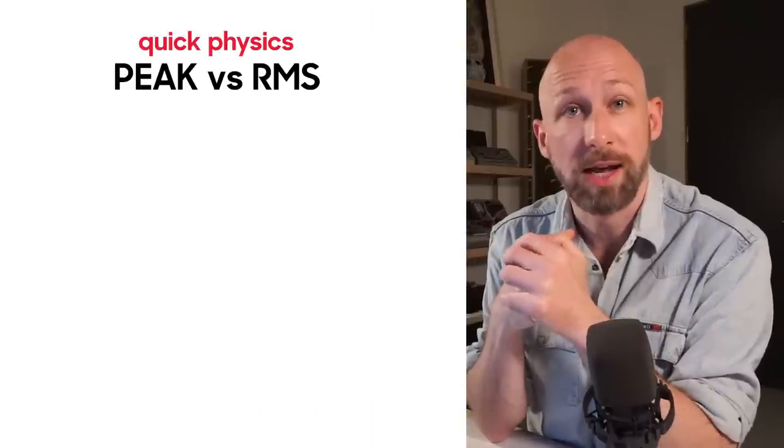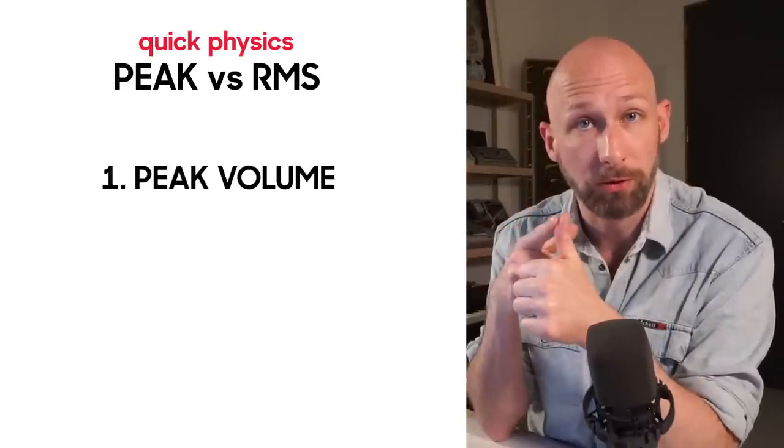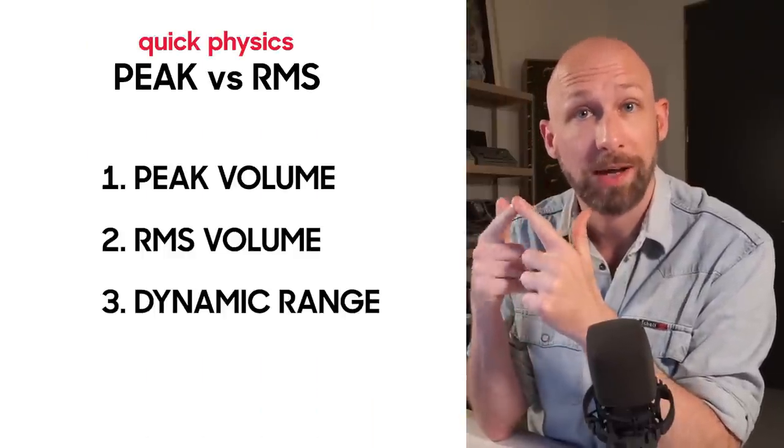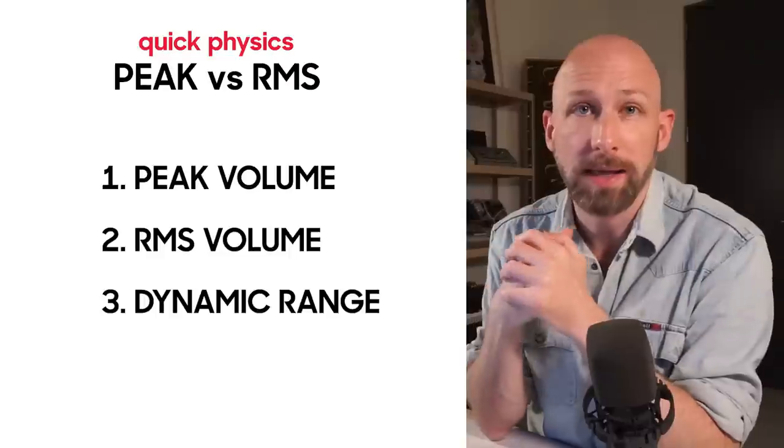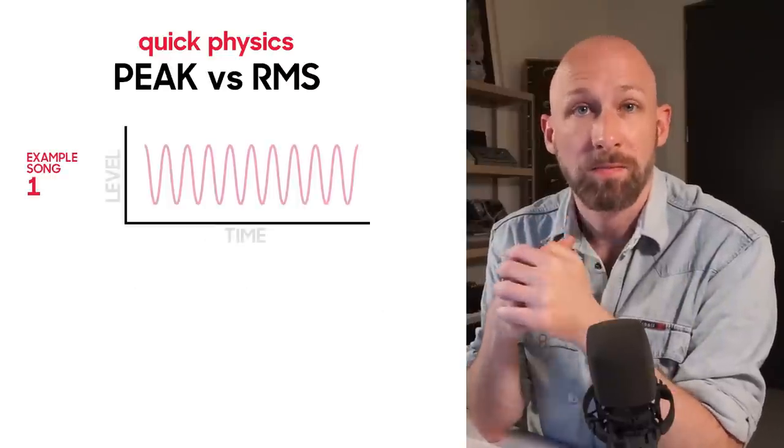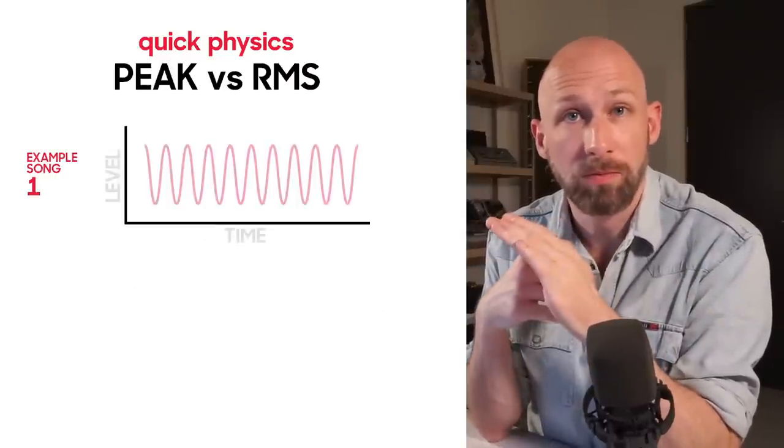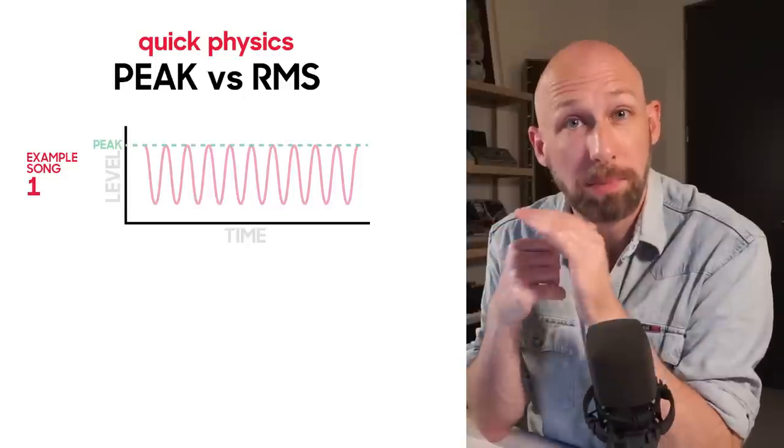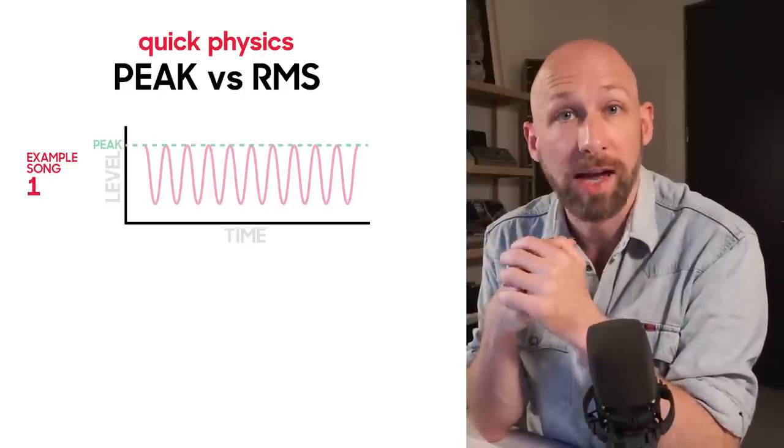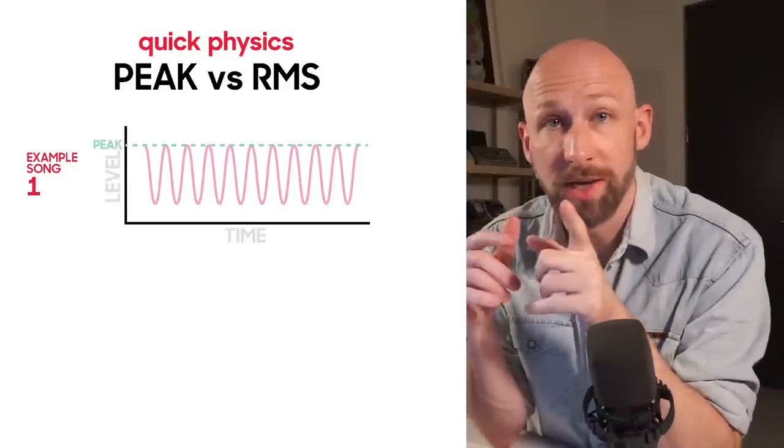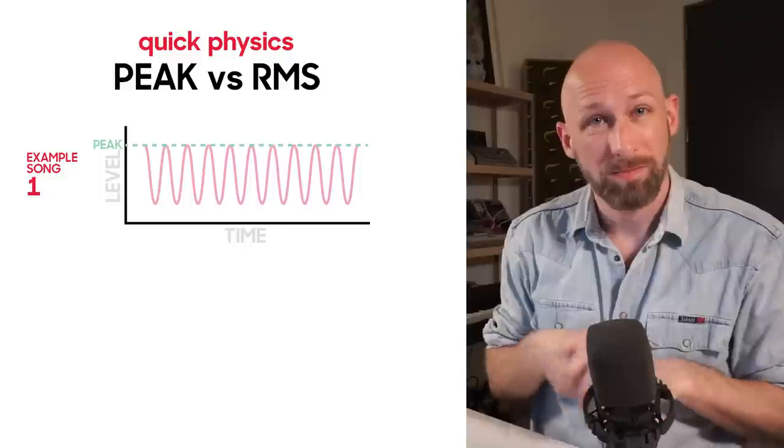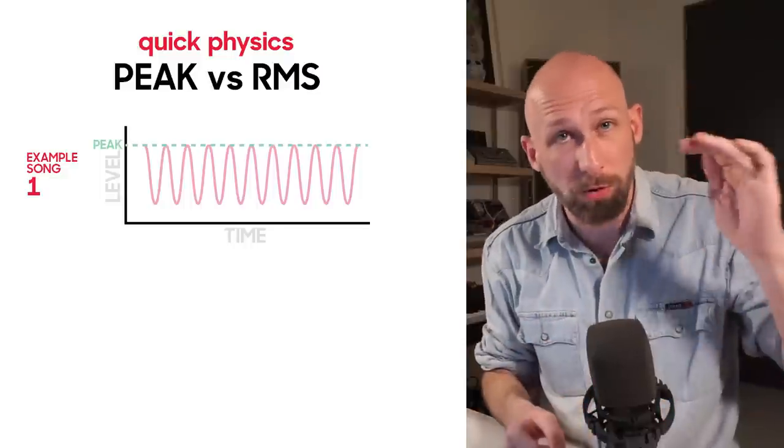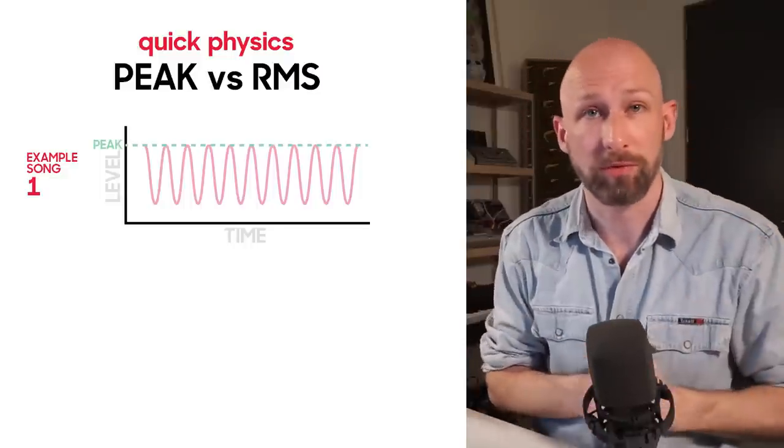So first we need to understand three terms: peak volume, RMS volume, and dynamic range. Imagine you're making a track and it looks like this. The absolute loudest volume that it ever gets, we call that peak loudness or peak volume, and it's measured in decibels and represented here with this green line. That's the volume that's usually going to show up on most meters that are reading the volume of this signal. However,